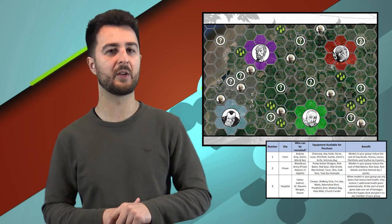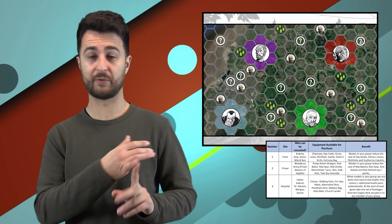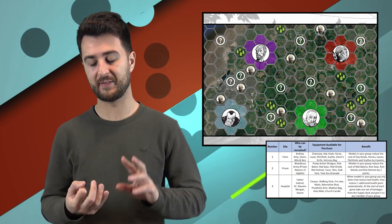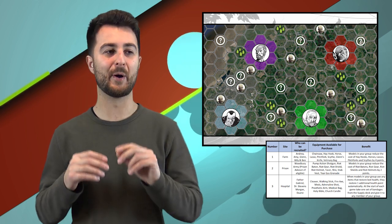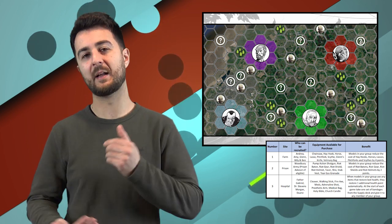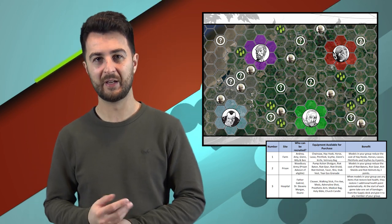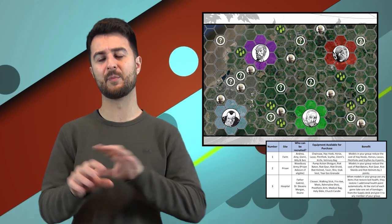For example, if you take control of the farm, you get access to Andrea and all her variants, Glenn and all his variants, and weapons like hay hooks and chainsaws. The bonus is that it reduces the cost of those weapons, making them cheaper and more efficient for your crews.